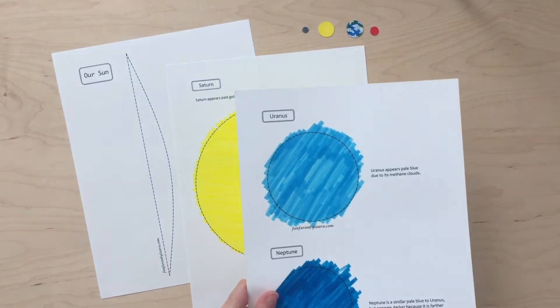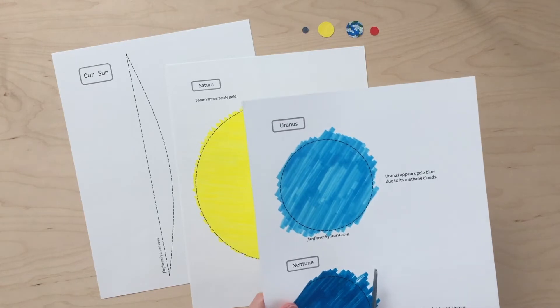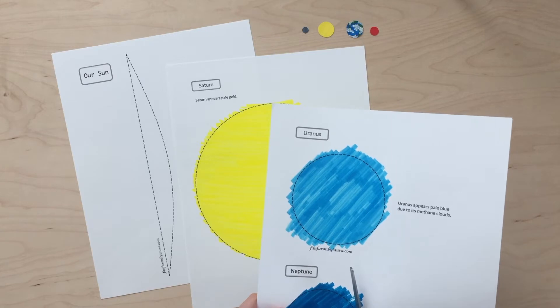When you're finished coloring, cut out your planets by cutting on the black dashed line. Be real careful with Mercury and Mars. They're so tiny they'd be easy to lose.